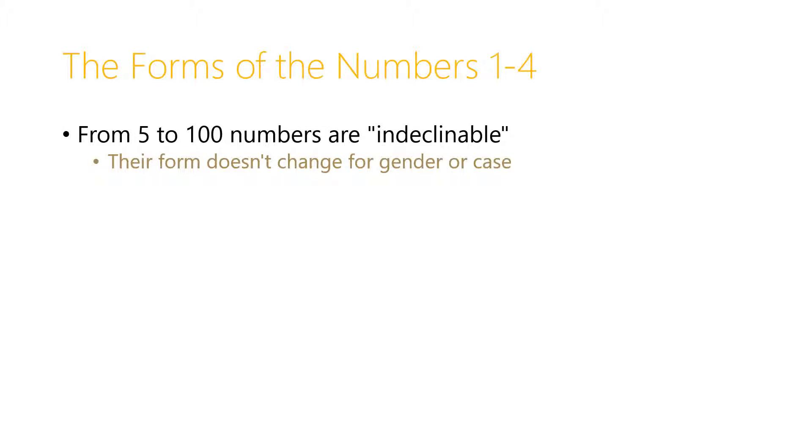From five to 100, the numbers are indeclinable. Their form doesn't change for gender or case. But from one to four, from heis to tesseres, we do change the forms like other adjectives.